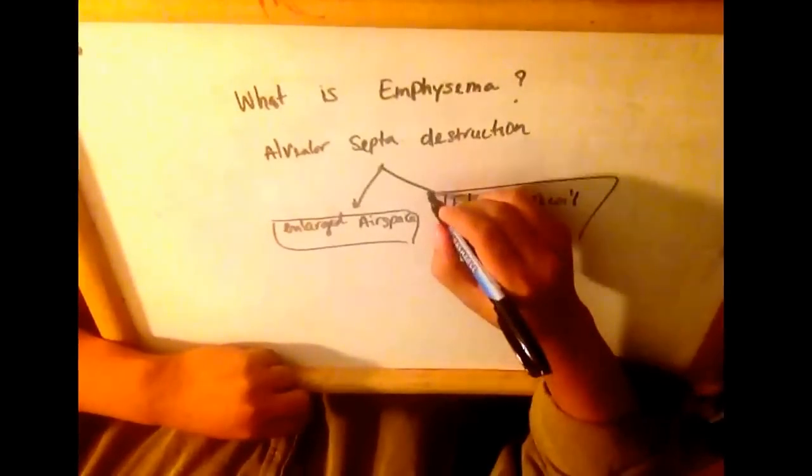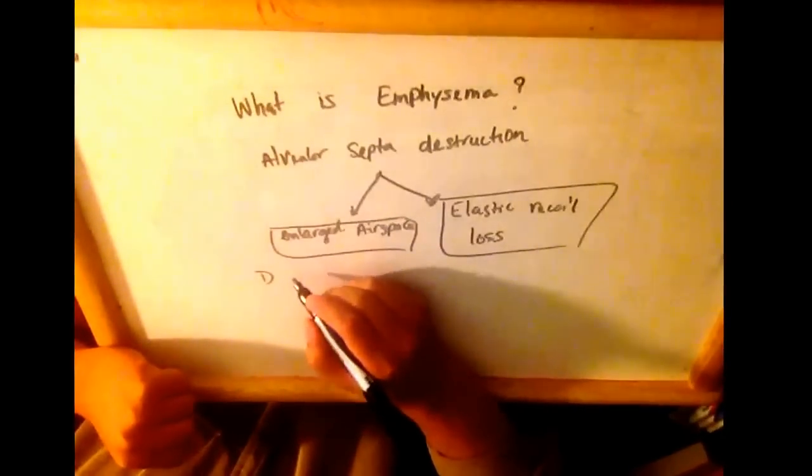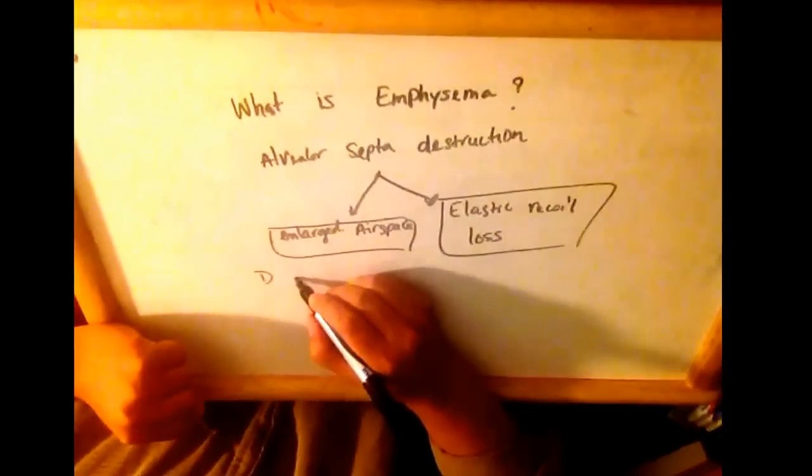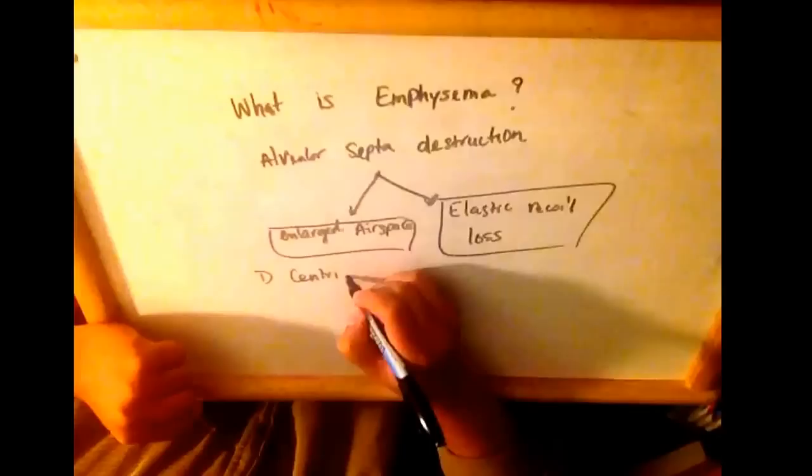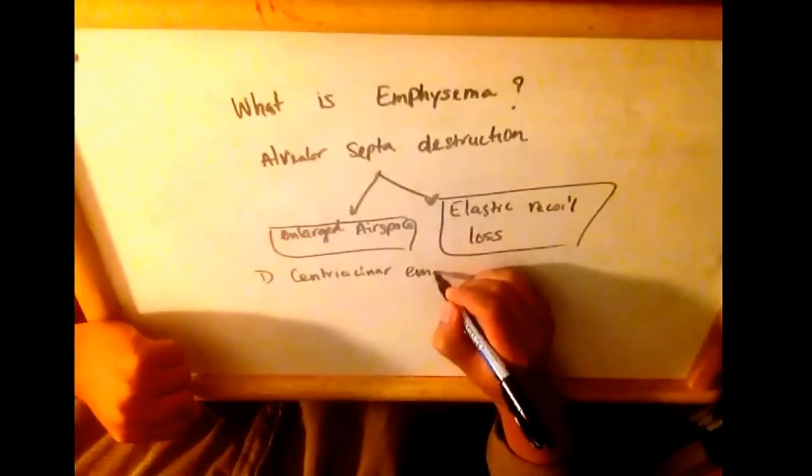So basically there are two types of emphysema. We can have centriacinar emphysema.